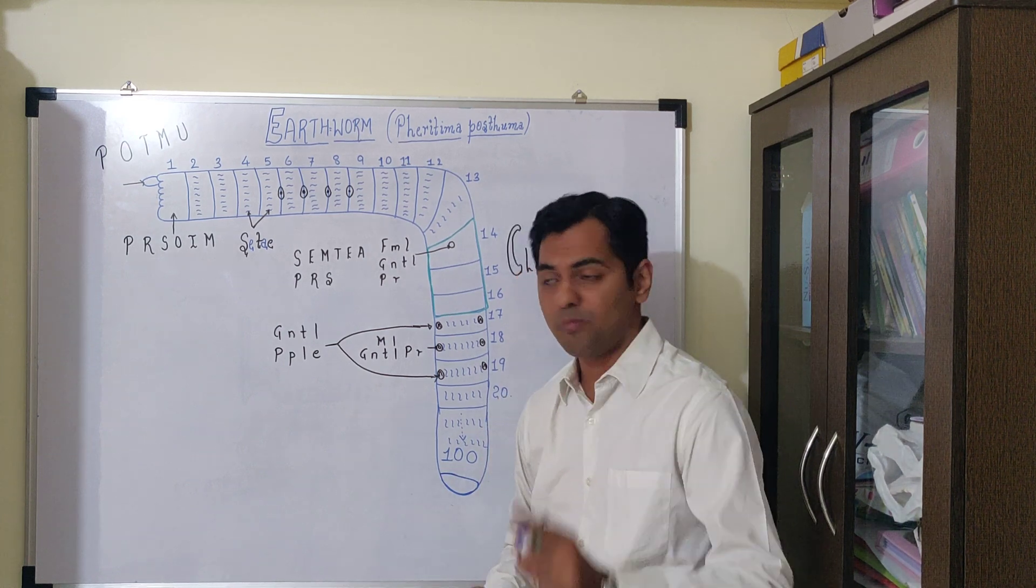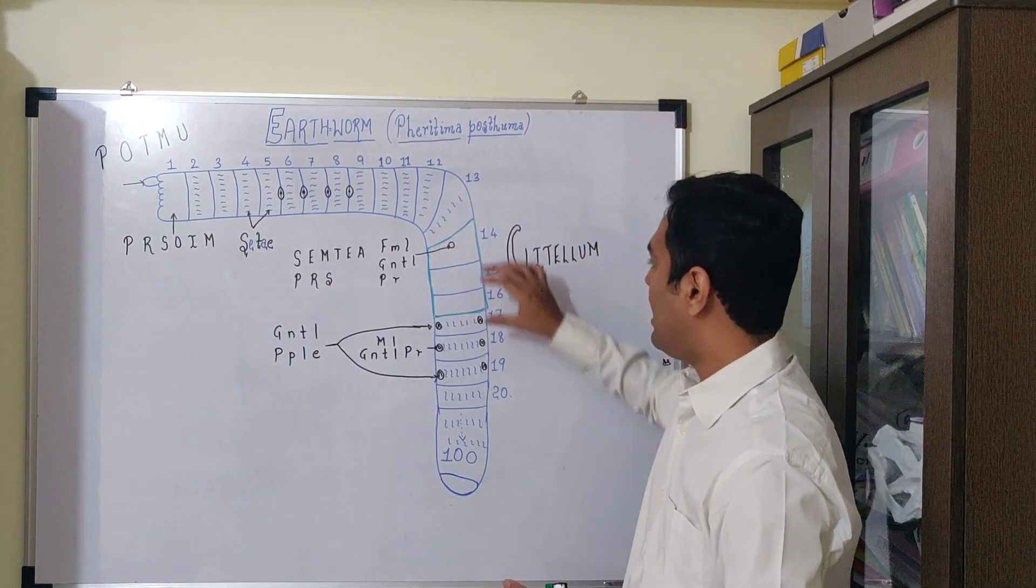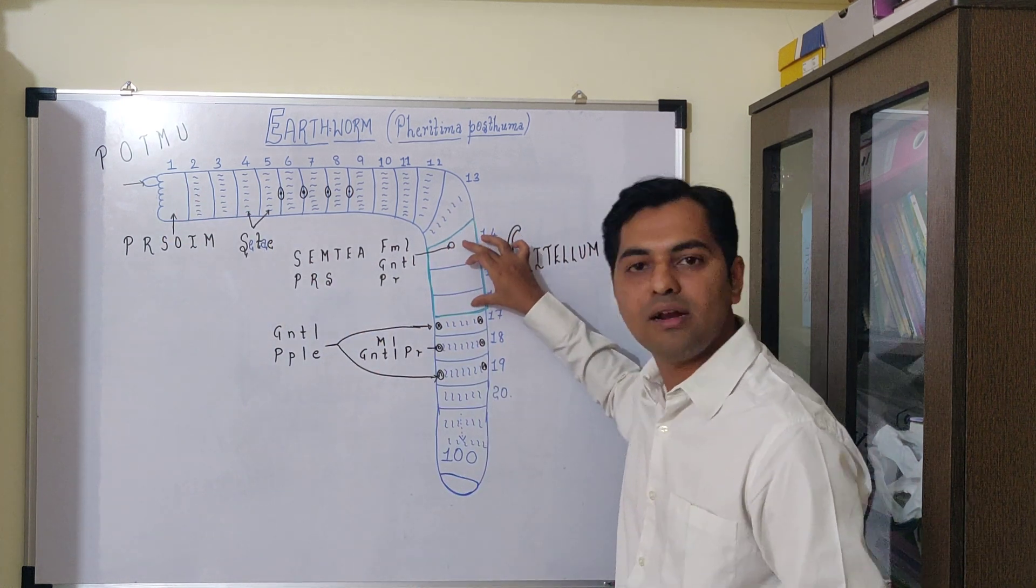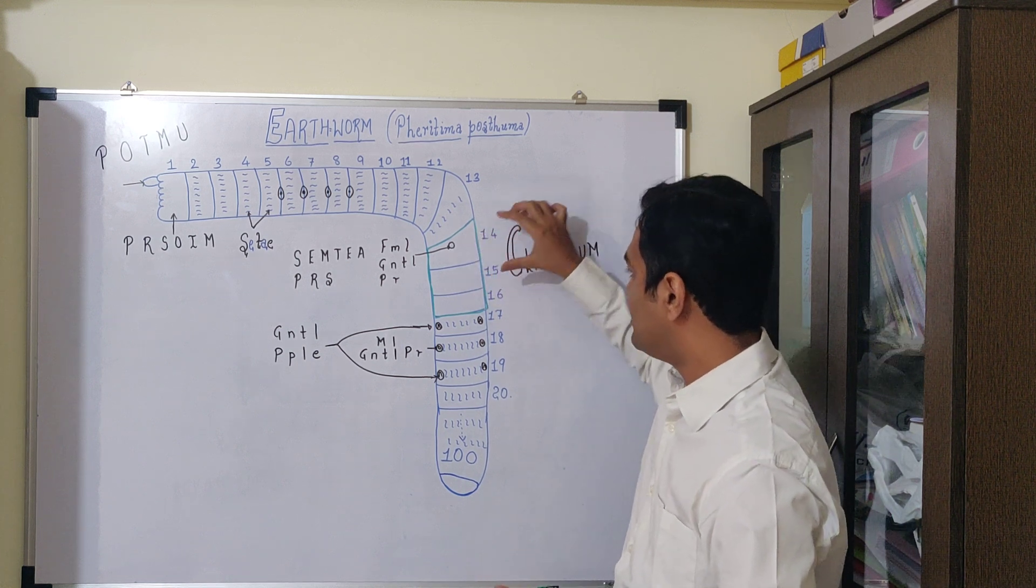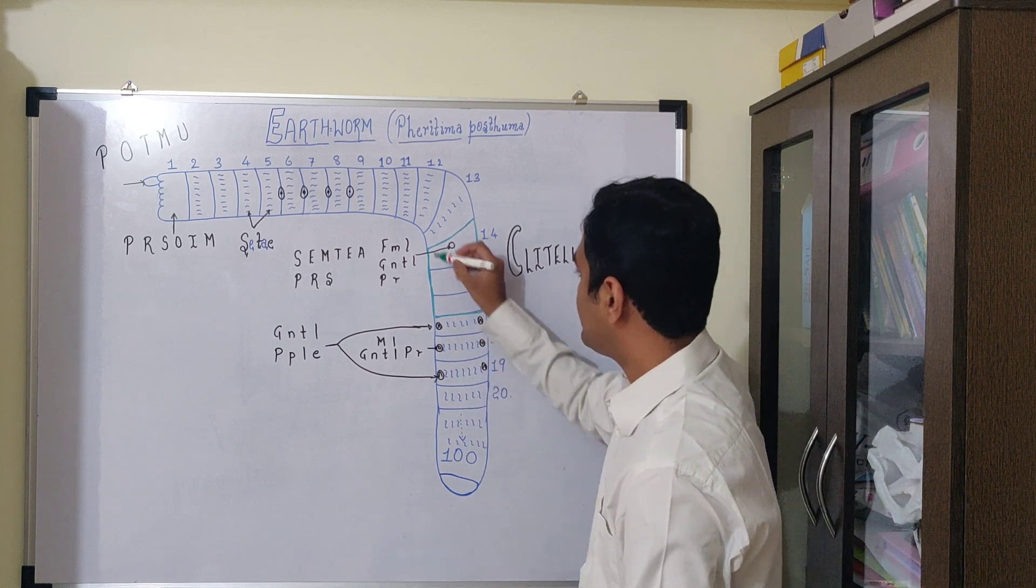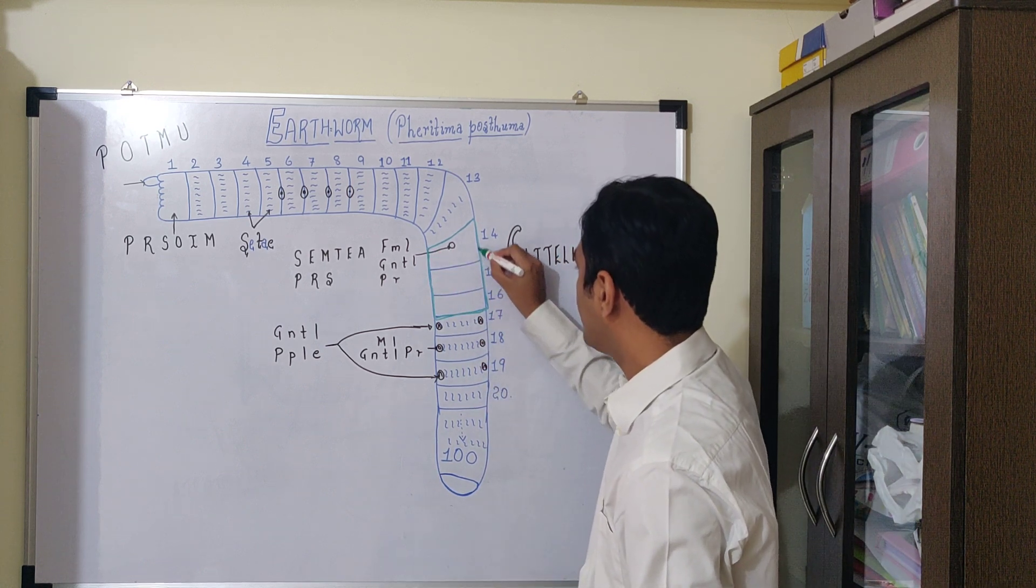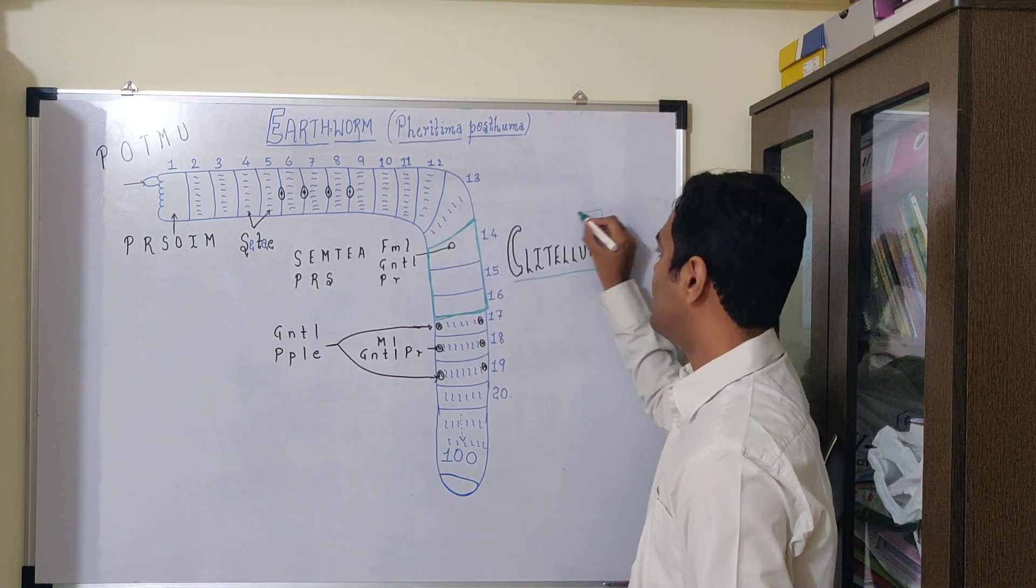As you can observe in the diagram, the first segment, the last segment, and these segments do not contain setae. Segments 14th to 16th have a specific glandular structure known as clitellum.